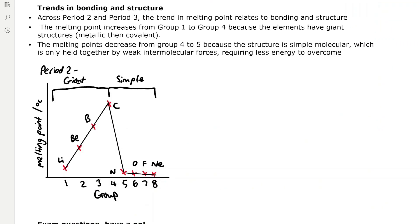There are also periodic trends in bonding and structure. Across period 2 and period 3, the trend in melting point relates to bonding and structure. Melting point increases from group 1 to group 4 because the elements have giant structures — metallic first, then covalent. Melting points decrease from group 4 to 5 because the structure changes from giant to simple molecular, held together only by weak intermolecular forces, which require much less energy to overcome than covalent bonds. On the graph you can see the giant structures in groups 1, 2, 3, and 4, with melting points increasing; then from carbon to nitrogen the melting point rapidly decreases as we move to a simple molecular structure, because London dispersion forces require much less energy to overcome than strong covalent bonds.